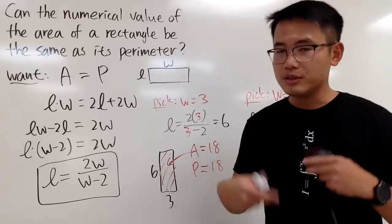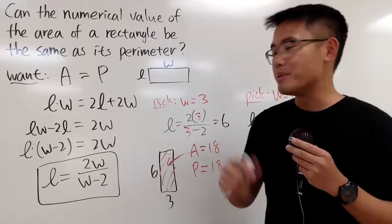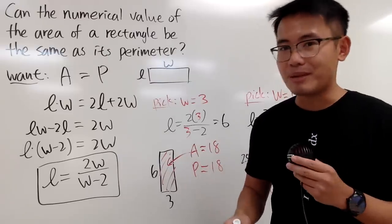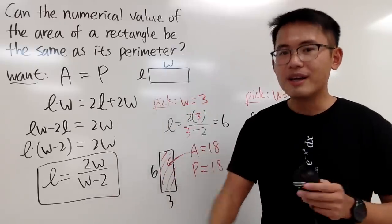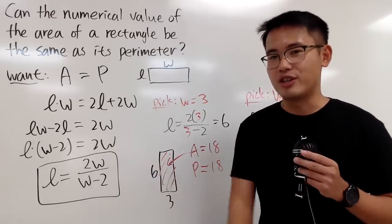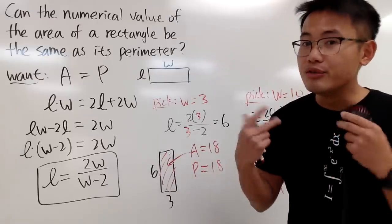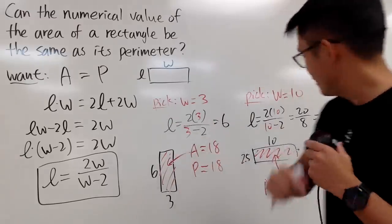You guys can leave a comment down below and let me know what you think. Give me more examples or maybe find out all the examples, or maybe show me it's not possible anymore. I'll give you guys another example: if you let w equal to 4, w will be whole number and the length will also be whole number. You guys can check that out and work that out. If you guys can find me more examples, leave a comment down below. Anyway, that's it.